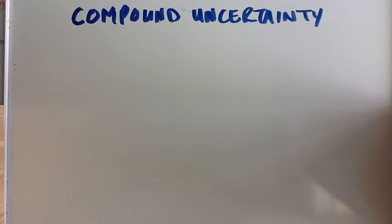Let's consider compound uncertainty. Compound uncertainty is when each quantity in an equation has its own uncertainty, and you're trying to get the overall uncertainty of the concept.